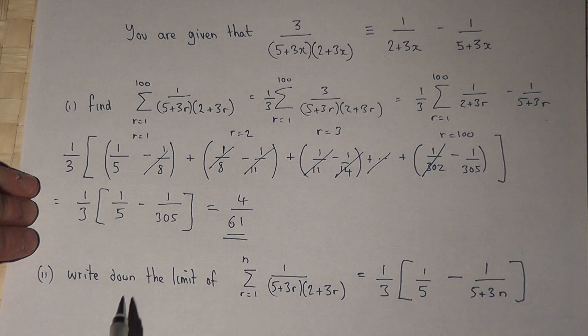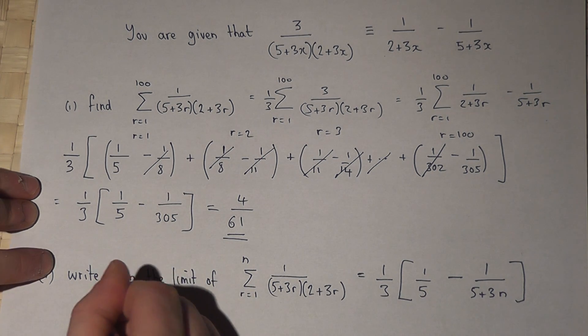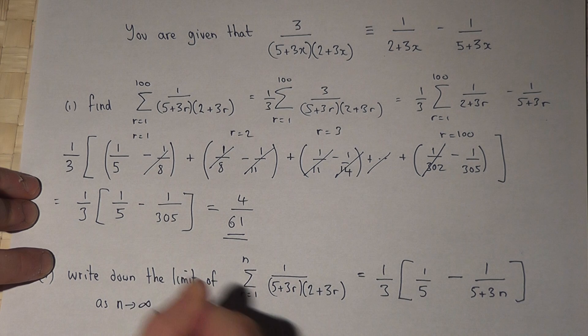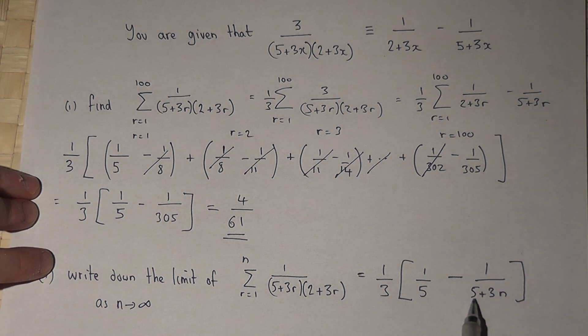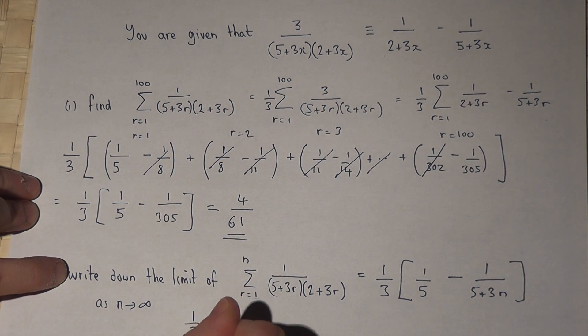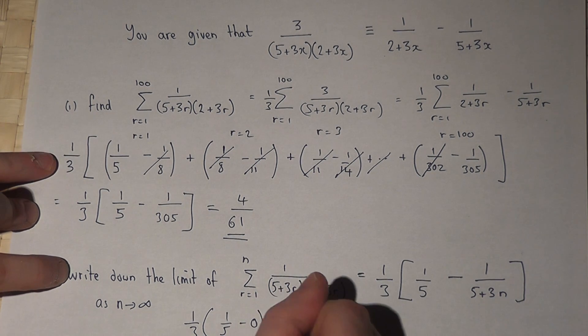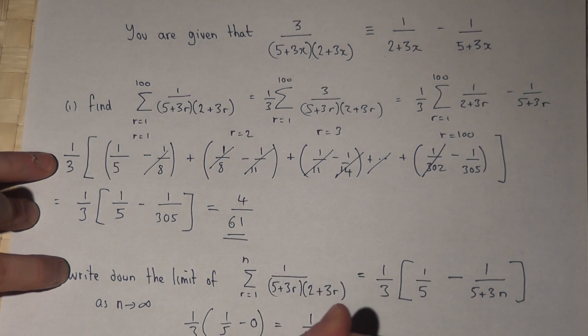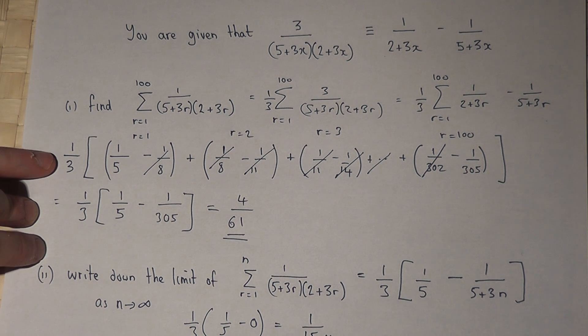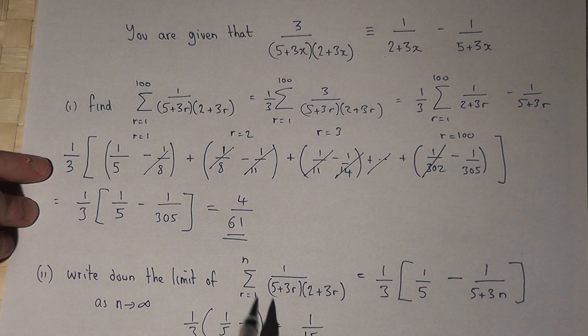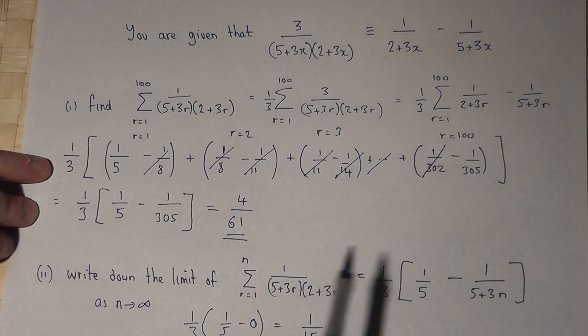Now as n gets larger and larger, as n tends to infinity, then 1 over infinity tends towards 0. So therefore this will approach a limit. And the limit will be 1 third times 1 over 5 take 0, because that tends to 0, which is just 1 over 15. So 1 over 15 is the sum as n tends to infinity of this expression.